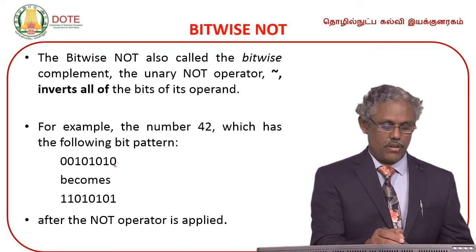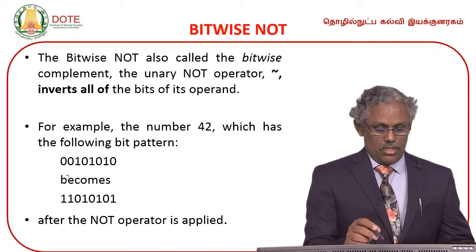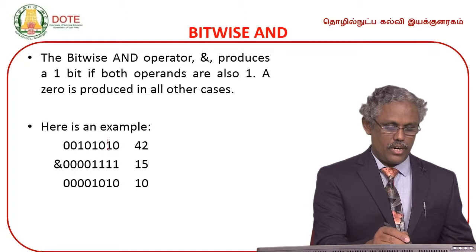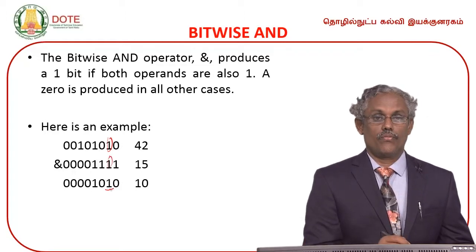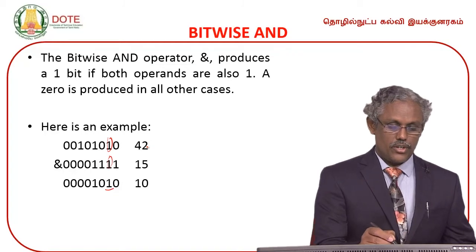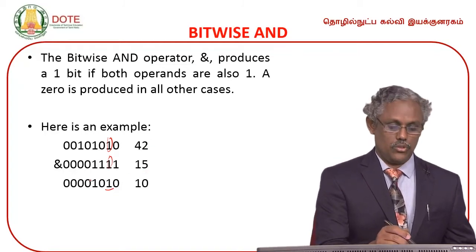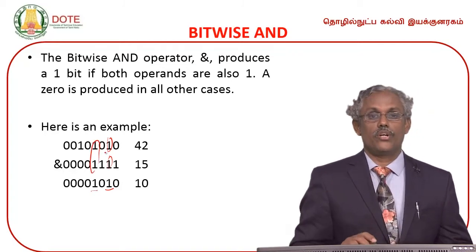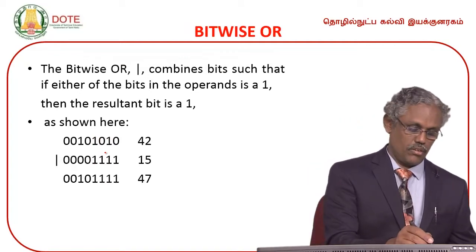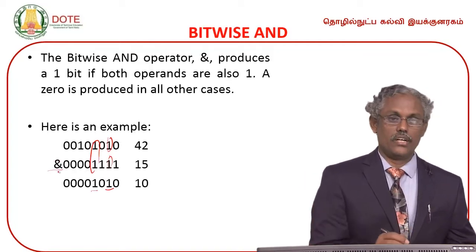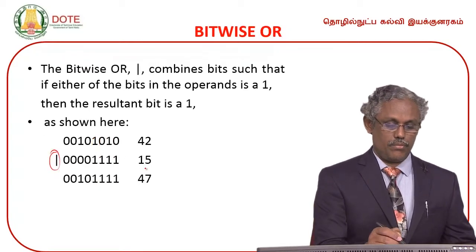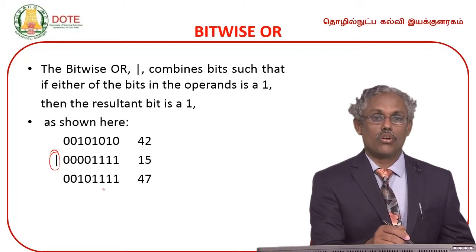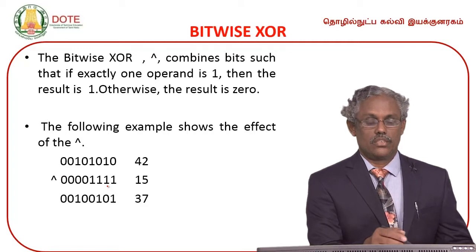Bitwise NOT is the bitwise complement and is a unary operation. For bitwise AND: if both bits are 1, output is 1. For XOR: if bits are different, output is 1; if bits are the same, output is 0. One's complement inverts each bit: 1 becomes 0, 0 becomes 1.